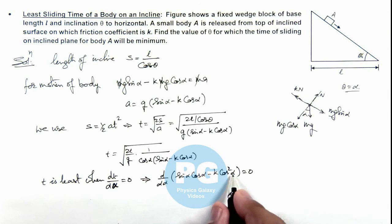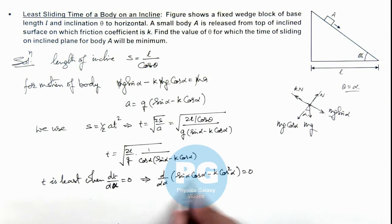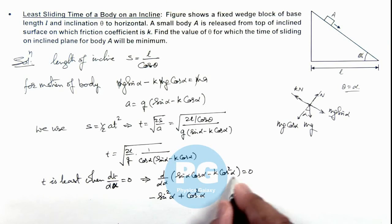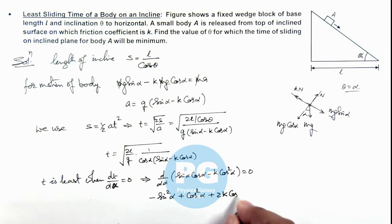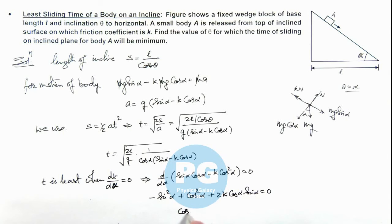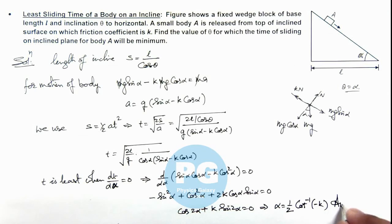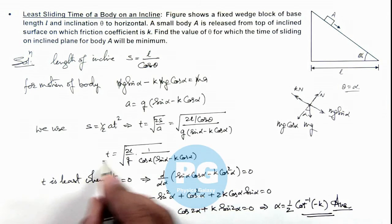Differentiating sin(alpha)·cos(alpha) gives (cos²(alpha) − sin²(alpha)), and differentiating −k·cos²(alpha) gives +2k·cos(alpha)·sin(alpha). So we get: (cos²(alpha) − sin²(alpha)) + k·sin(2alpha) = 0, which simplifies to cos(2alpha) + k·sin(2alpha) = 0. Solving this gives the final result: alpha = ½·cot⁻¹(−k), which is the angle at which the time of sliding is minimum.